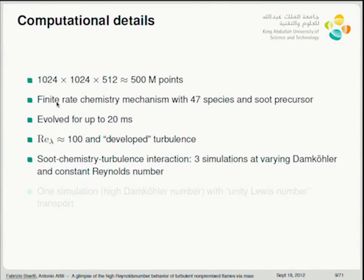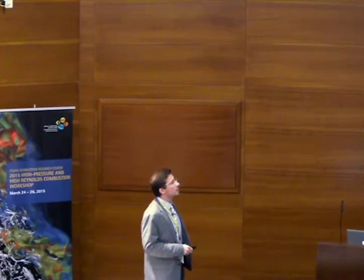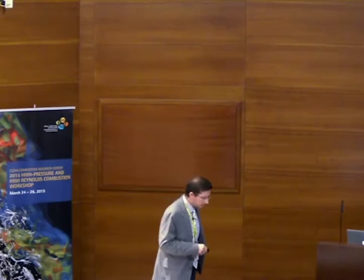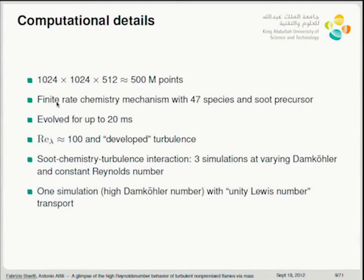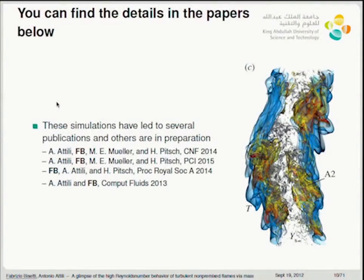We've looked at soot chemistry-turbulence interaction with three simulations varying Damköhler number at constant Reynolds number. Today I'm presenting statistics from the high Damköhler number case — closest to the infinitely fast chemistry limit — with two different diffusion models: full transport with mixture-average properties, and a unity Lewis number model. The details are in these publications and you're welcome to email me or Antonio with further questions.